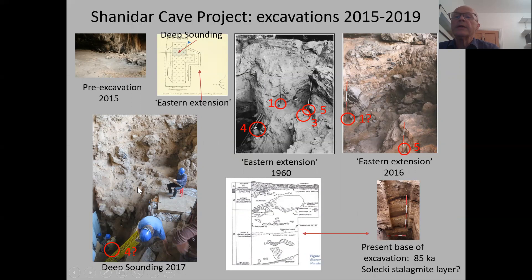By 2017, we'd gone from those locations down into his deep sounding — just a small part. The figures working down here are standing more or less where Shanidar 4, the flower burial, was found. We've gone further — about another metre and a half deeper. We're down at what Solecki called a stalagmite layer, at a depth dated to 85,000 years ago.